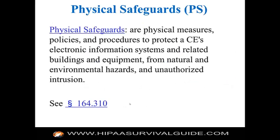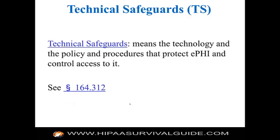We're covering highlights of where business associates intersect with the security rule, privacy rule, and breach notification rule. Because business associates are required to comply with the security rule, they must implement the administrative safeguards, physical safeguards, and technical safeguards. The physical safeguards are physical measures, policies, and procedures to protect the covered entity's electronic information systems and related buildings and equipment from natural and environmental hazards, and unauthorized intrusion.